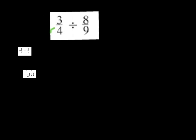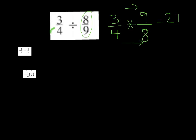I have some practice problems for us to do. The first one we are going to solve is 3 fourths divided by 8 ninths. We're going to keep that first fraction the same, then multiply by the reciprocal of the second fraction — we flip-flop it. Now we multiply across: 3 times 9 is 27, and 4 times 8 is 32. You cannot simplify 27 thirty-seconds, so that is your answer.